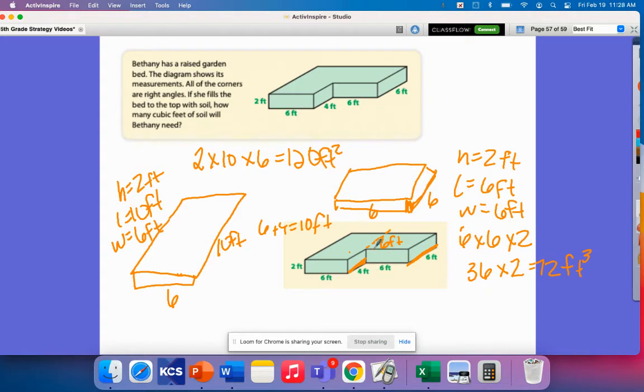Now don't forget, because it wants to know how many cubic feet of soil does she need in all. So we have seventy-two, one twenty plus seventy-two, one hundred and ninety-seven feet cubed. This would be the total amount that she would need.